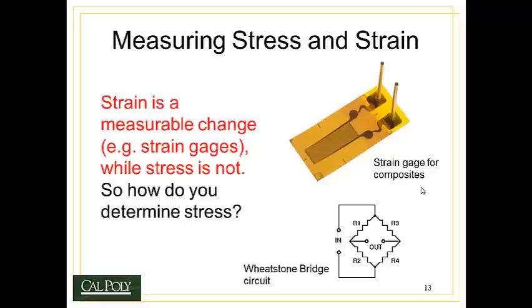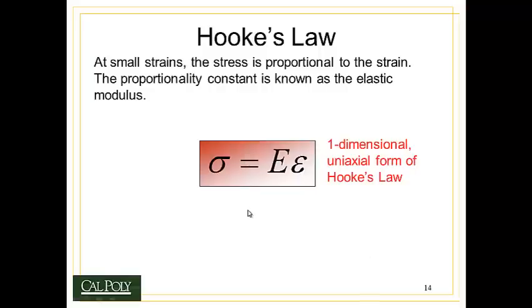It turns out that strain is something we can actually measure — all you have to do is be able to measure a change in length. But the problem is there's no easy way to measure stress directly. We have what are called strain gauges, which are simply electrical wires that zig-zag back and forth, bonded onto the surface of a tensile specimen. We measure the electrical current running through this wire as a function of the load applied. The electrical resistance changes because as you stretch the material, the resistivity goes up. We can also measure this using a Wheatstone bridge circuit, a series of resistors that help measure the change in current relative to the change in displacement. But none of this helps us figure out how much force is actually applied to the material.